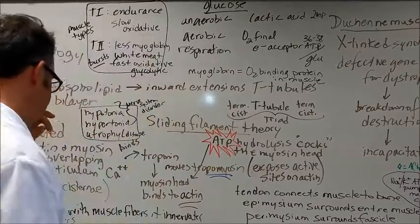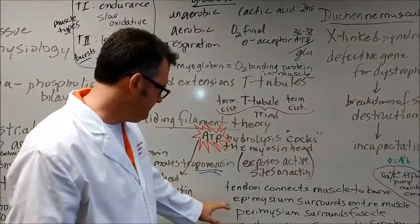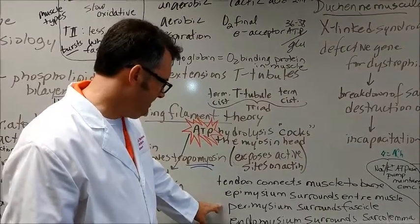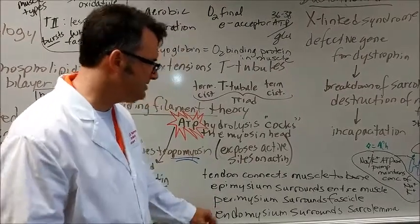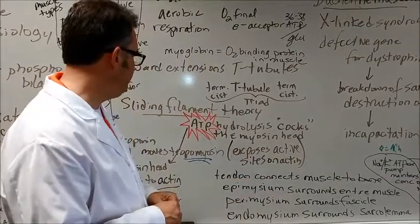Let's talk about tendons connecting muscles to bones. There's an epimysium that surrounds the entire muscle. Perimysium surrounds fascicles. Endomysium surrounds the sarcolemma. So this is kind of going from big to little here in this picture right here.